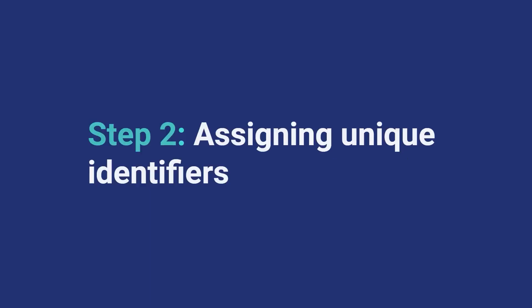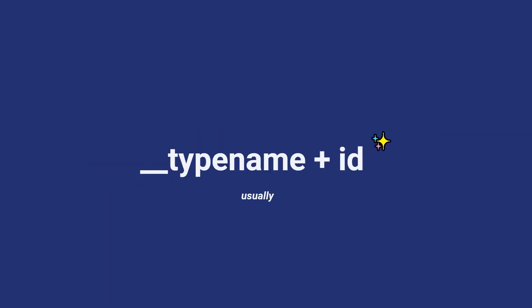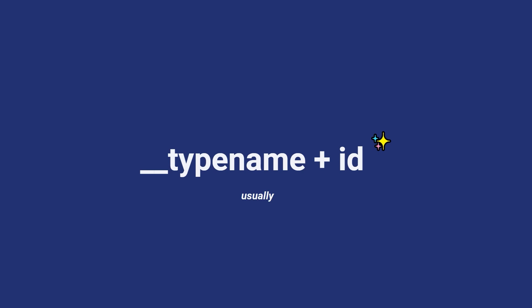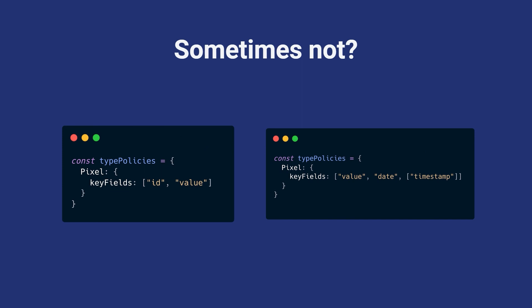Now that we have those objects, we're going to assign them unique identifiers. Type name plus identifier — so if you have an ID on your object, it'll take type name plus that, and that'll be your cache key. Except sometimes you don't have an ID, sometimes you have these other random fields you want to use. So you can use the key fields API to define another way to create your key — ID plus value, ID plus anything, maybe no ID, value, date, timestamp. It just has to be consistent and stable so you can fire this later in your lifecycle and find these objects again.